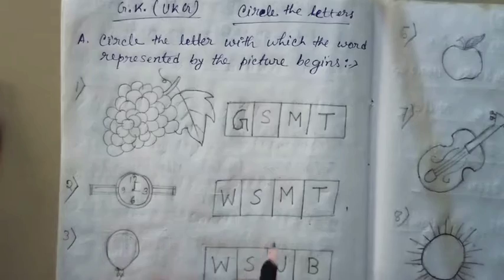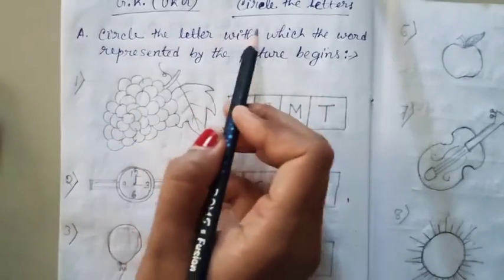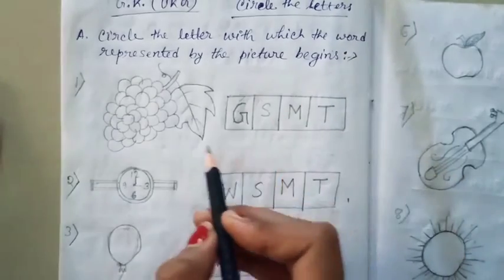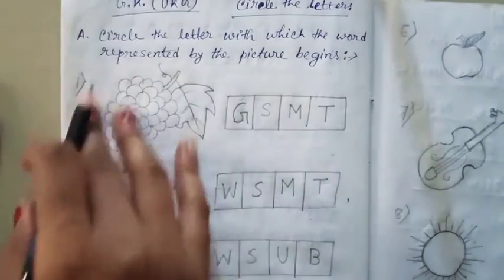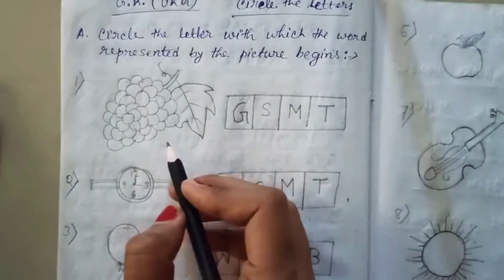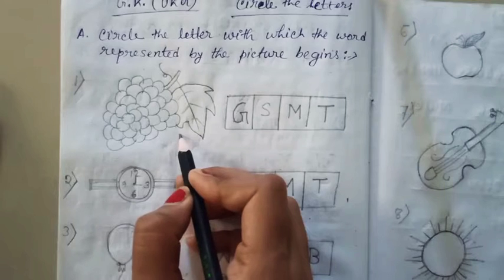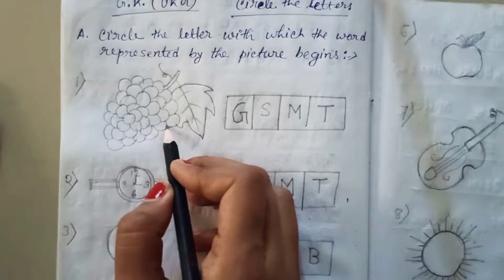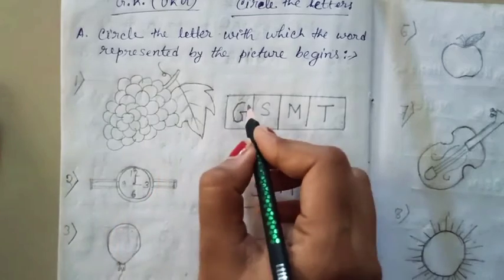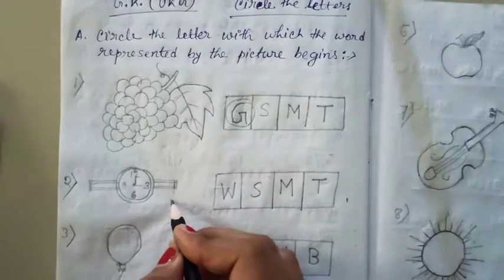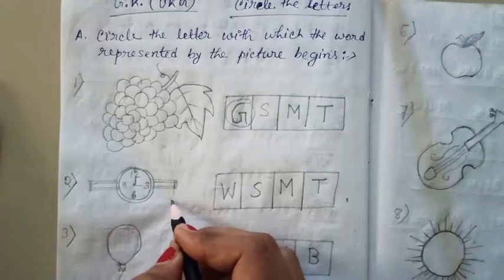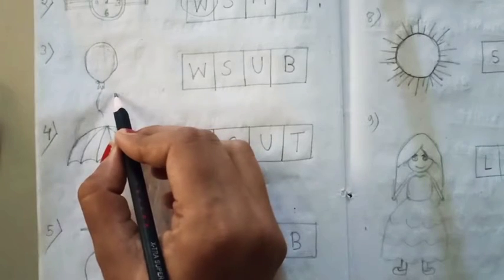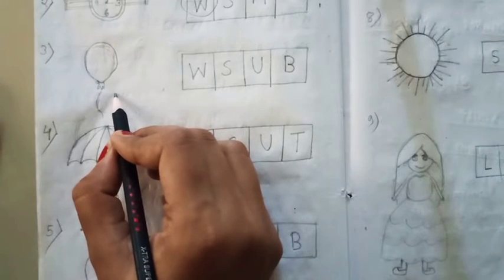Students, this is your today's homework. Circle the letter with which the word represented by the picture begins. Look — these are some pictures. You have to circle the beginning letter of this thing. What is this? This is a grave. Circle G. What is this? This is a watch. Circle W. What is this? This is a balloon. Circle B.